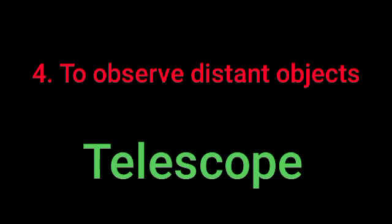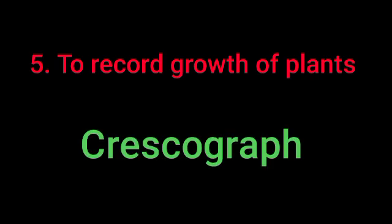To observe distant objects, we use a telescope. By using a telescope we can see distant objects. To record the growth of plants, we use a crescograph. The crescograph is the instrument used to record the growth of plants.